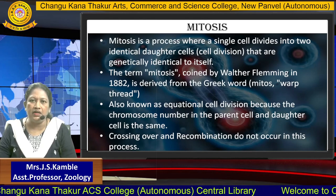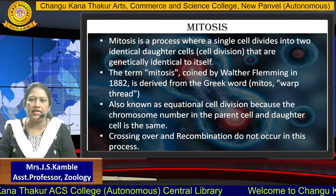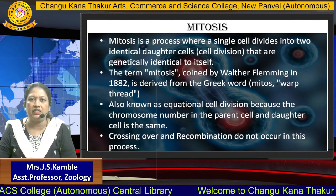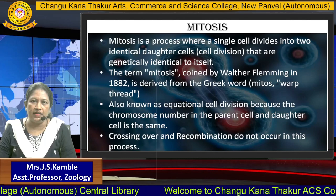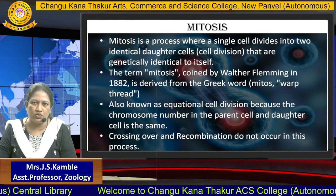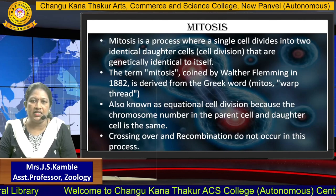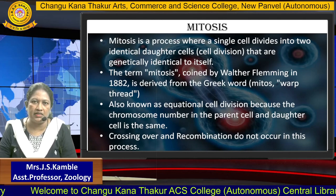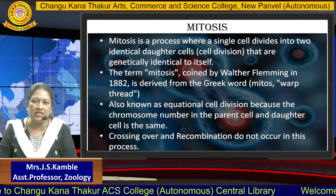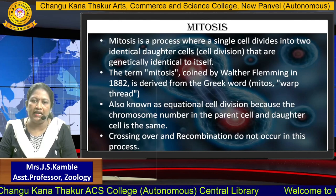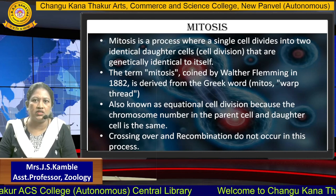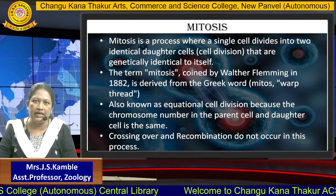For example, a human cell consists of 46 chromosomes. Whenever the human cell is divided, both daughter cells will contain 46 chromosomes. Mitosis is carried out in a somatic cell; it is never carried out in a germ cell, that means egg cell and sperm cell. Crossing over and recombination also do not occur in this process.